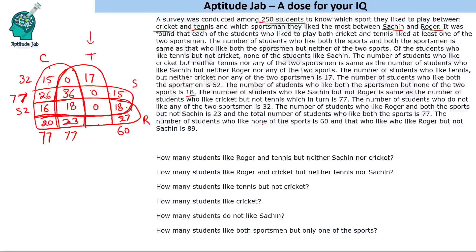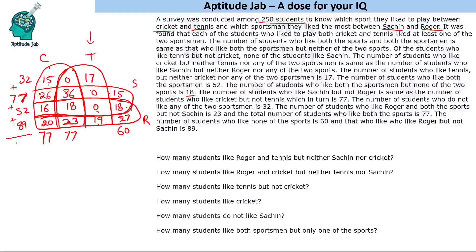The number who like Roger but not Sachin is 89. So that gives us 43, and 43 plus 27 is 70, making the last piece 19. Verifying the total: 32 plus 77 plus 89 equals — 109 plus 52 is 161, plus 89 gives 250. This confirms all 250 students are distributed correctly across the regions.